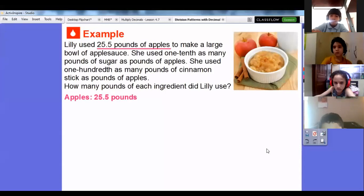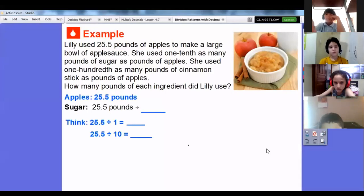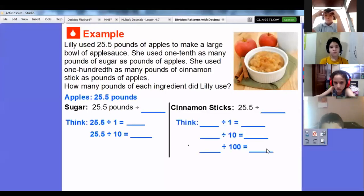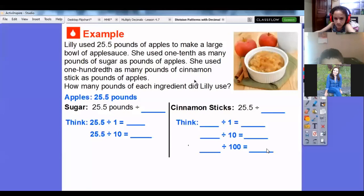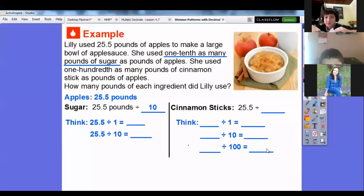So how many pounds of each ingredient did Lily use? The first one is easy—we had 25.5 pounds of apples. She used one tenth as many pounds of sugar as apples, so we're going to divide this by 10. The cinnamon says we used one hundredth, so we're going to divide that by 100. Let's work on the sugar: 25.5 divided by 1 is 25.5, and 25.5 divided by 10, we're just going to move that decimal one place to the left, so 2.55.